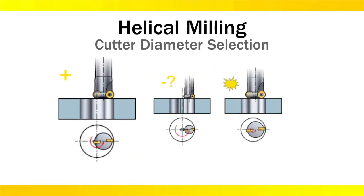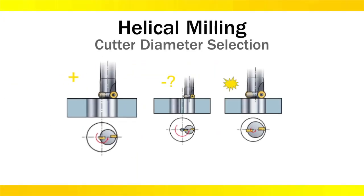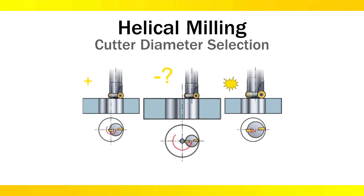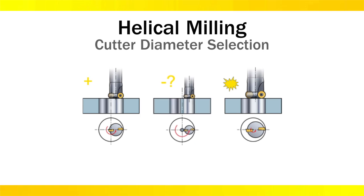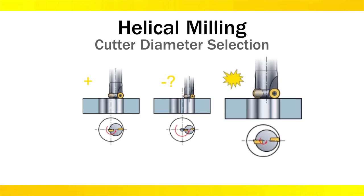Correct cutter size is key. If the cutter is too small for the feature being machined, it will leave a pip or leftover material in the center, which can fall and damage the cutter. Likewise, if the cutter is too large for the feature and overlaps its cutter path over the non-center cutting portion of the tool bottom, it will result in a collision.